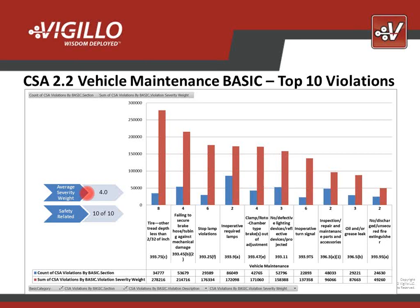I've applied an analysis I call 'safety related' — looking at those top ten violations and asking whether they have a nexus, a relative impact on true safety. There are things like bald tires, poses not secure, and lamp violations. Reasonable people could probably agree that when those things are not functioning, the chances of having an incident leading to a crash, injury, or fatality are a reasonable assumption. Out of those top ten vehicle maintenance violations, I assign that ten out of ten are safety related — that's my judgment.